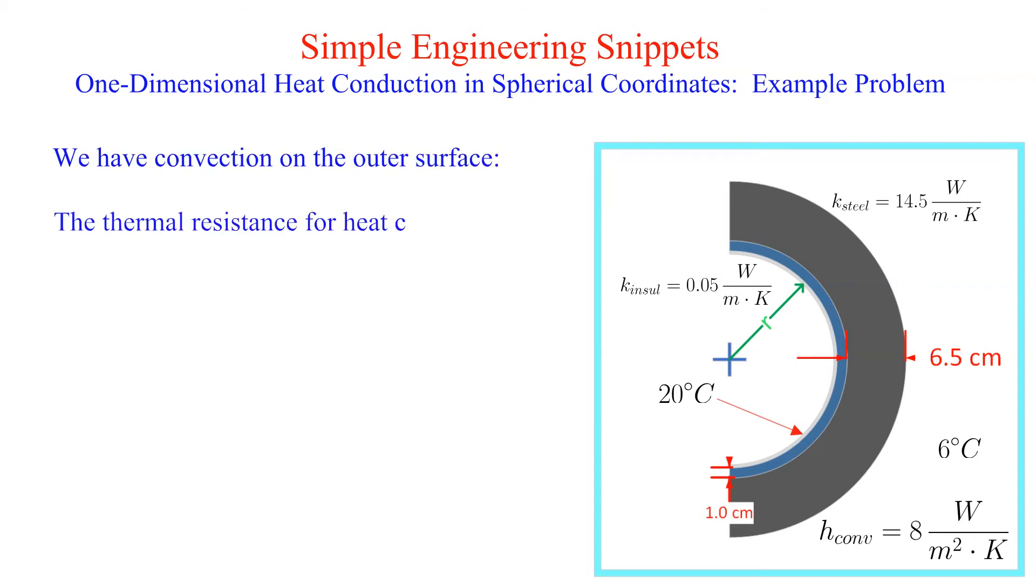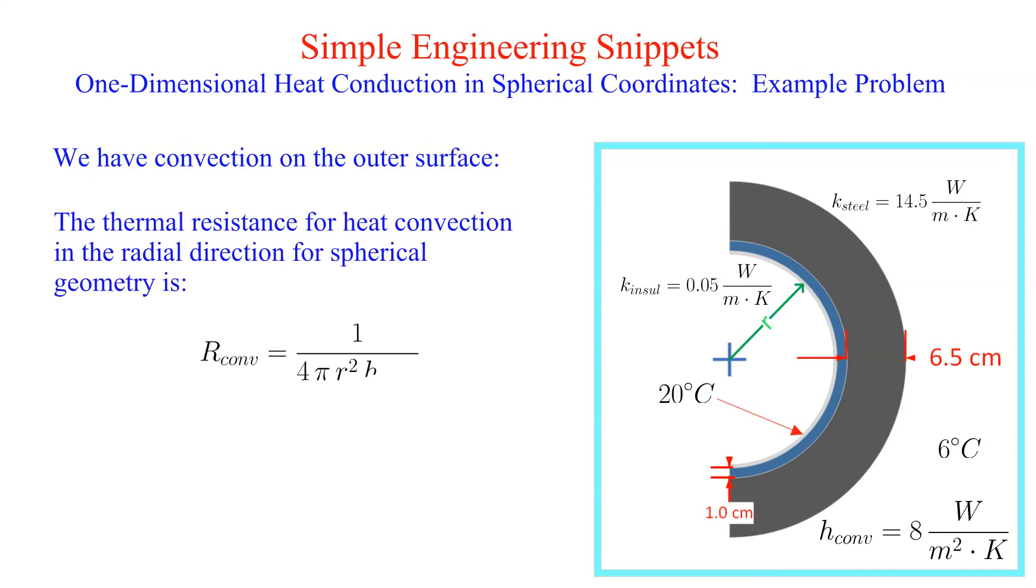There is convection between the steel layer and the ocean. The thermal resistance for convection is provided along with the appropriate radius.